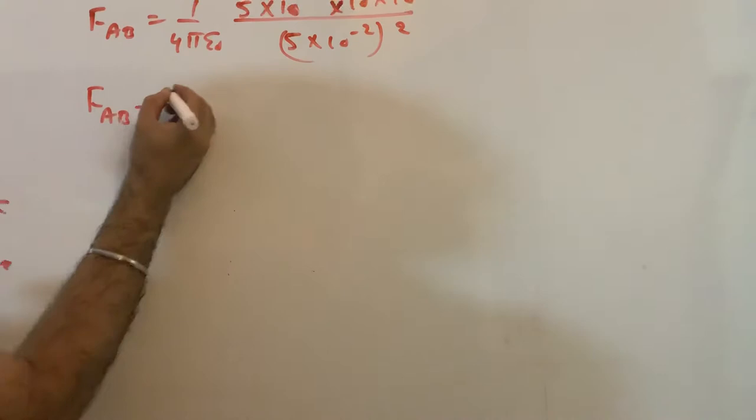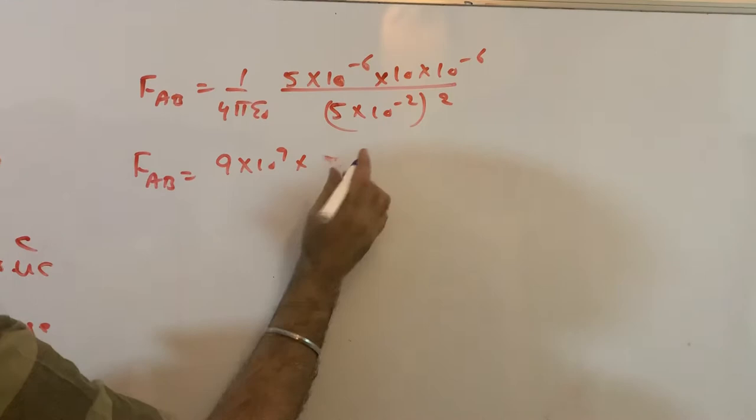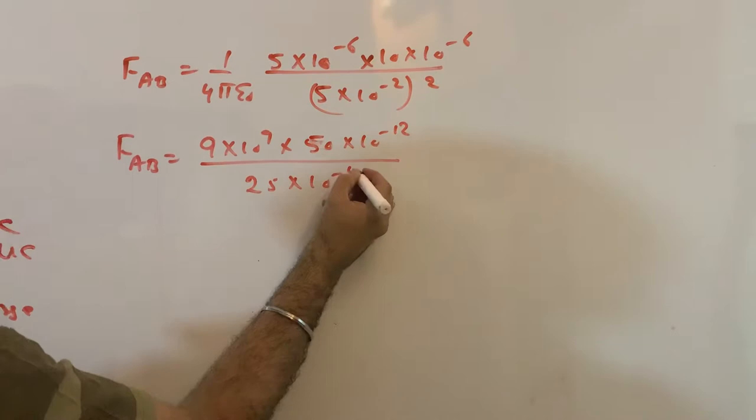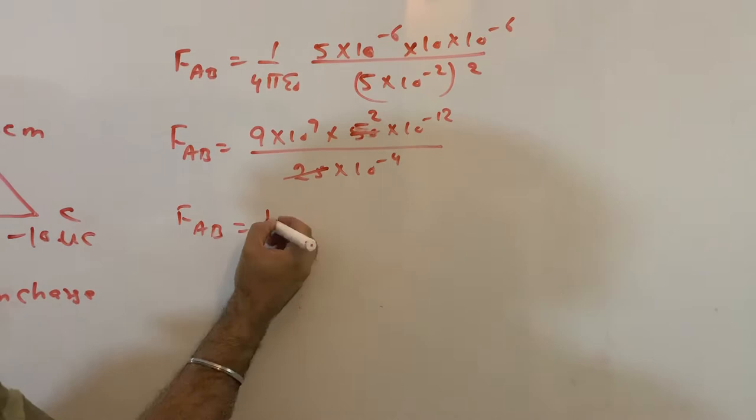So you can find this: 9×10^9 times 5 or 50×10^-12. This will become 25×10^-4, so this will become 2.